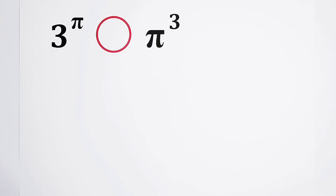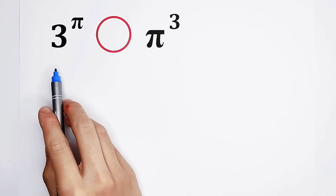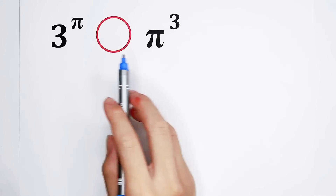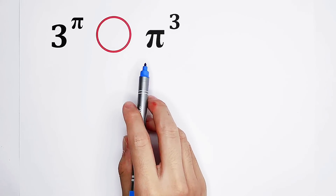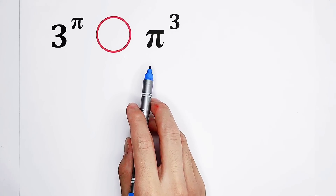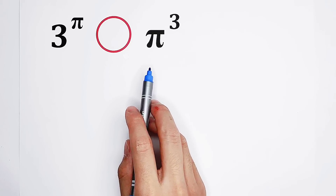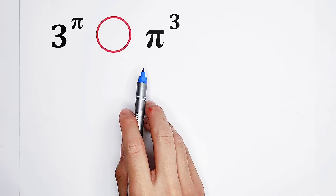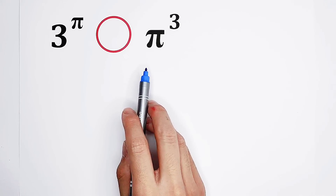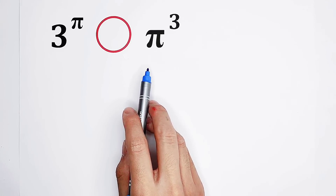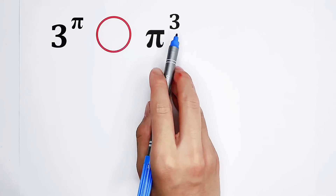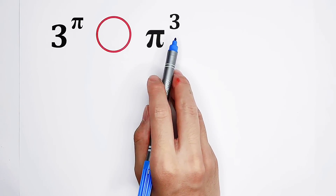Compare which is greater: 3 to the power of pi, or pi to the power of 3. Oh my god, not easy. Pi is irrational. However, 3 is an integer.